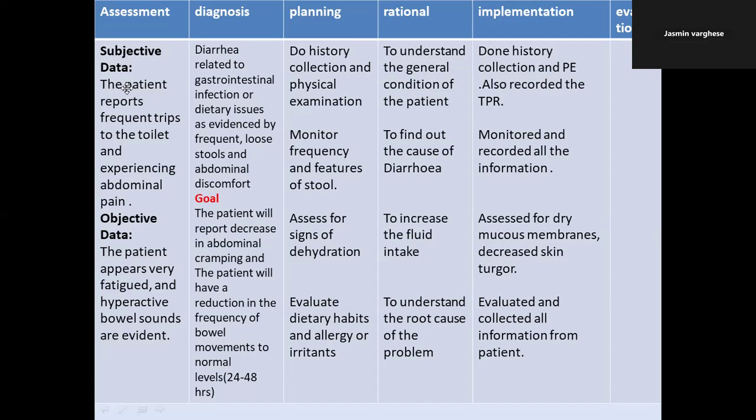Your goal should be written in future tense. In the planning column, always start with history collection and physical examination, written in present tense. The rationale is to understand the general condition of the patient — always use the phrase 'to understand.' In implementation, record the history collection, physical examination, TPR, and any observations from vital signs checking.